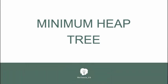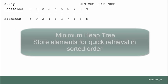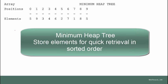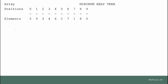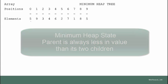Let's talk about minimum heap trees. This is another application of the binary tree, so that information can be stored and retrieved in sorted order very quickly and efficiently. The basic state of a minimum heap tree is that the parent is always less than its children in value. I'm going to show you how we build a minimum heap tree one step at a time, and each step, something is added and then it has to be checked to make sure that we're in minimum heap state.